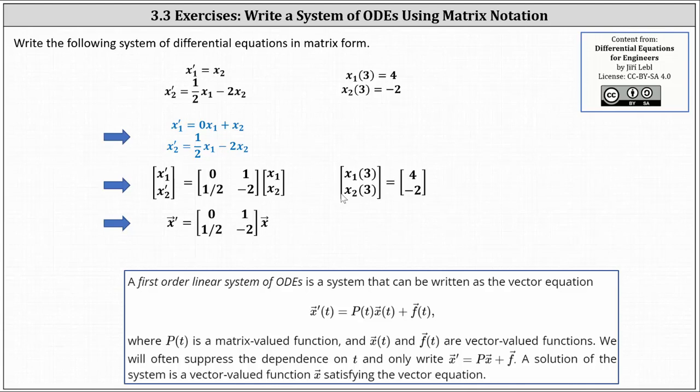And then for the initial conditions, we can also write those as the vector-valued function x of three equals the two-by-one matrix with entries four and negative two, which represents a two-dimensional vector. I hope you found this helpful.